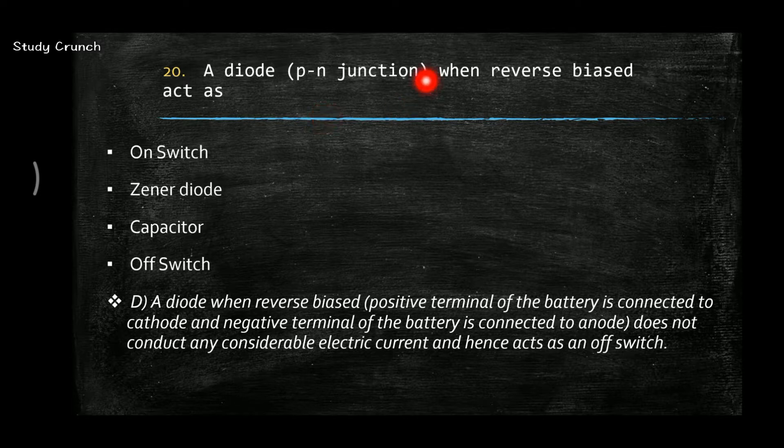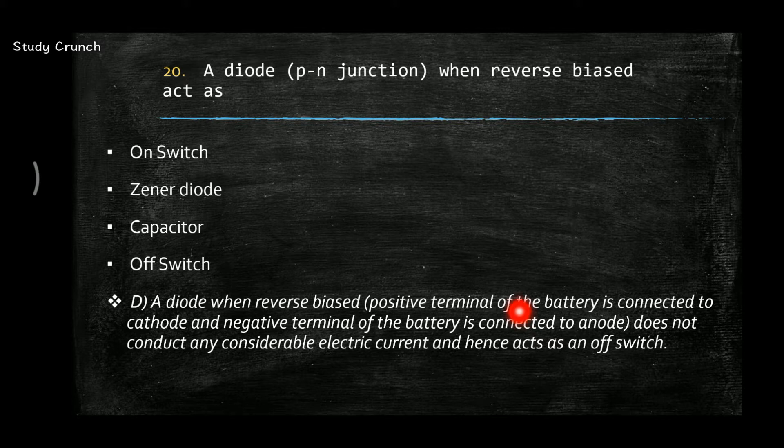Next, a diode, i.e. P-N junction when reverse biased acts as an off switch. Why? Because at the reverse bias, the positive terminal of the battery is connected to the cathode and negative to the anode. So it does not conduct any considerable electric current and hence acts as a switch off circuit.